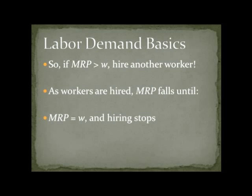This is really a marginal decision. If you hire this last worker, profits won't change, so it's okay to hire or not to hire. But you certainly wouldn't want to keep hiring beyond this point, because then the marginal revenue product would fall below the wage and you'd be spending more money than you're making on those workers. So the condition — marginal revenue product equals wage — gives us the profit-maximizing solution for the firm.